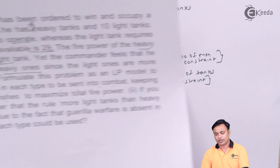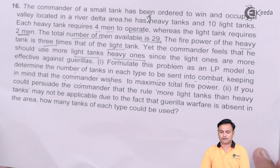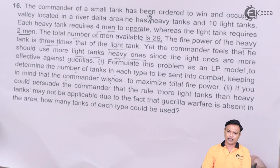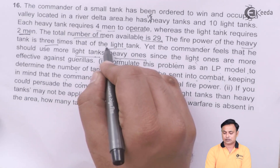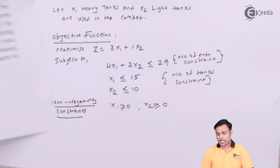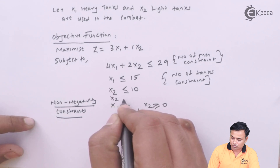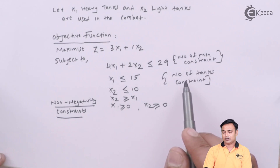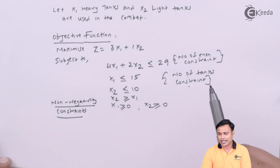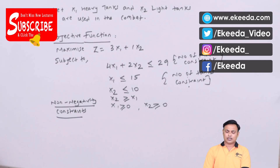This was a unique problem where we have certain tanks to combat guerrilla warfare. There was one more condition given by the commander: he should use more light tanks than heavy ones. So x2 must be greater than or equal to x1. The constraints are: manpower constraint, tank availability constraints, the commander's condition (x2 ≥ x1), and non-negativity constraints. With this the problem is complete. Thanks for watching — please subscribe to our channel.